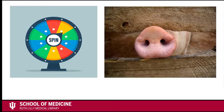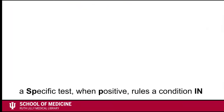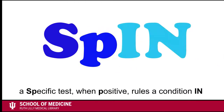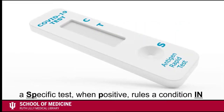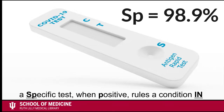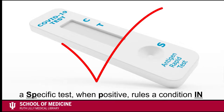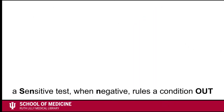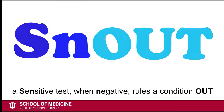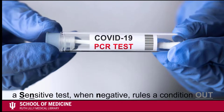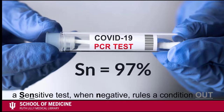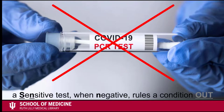Another way to help remember and understand the difference between sensitivity and specificity is to use the mnemonic SPIN and SNOUT. SPIN stands for a specific test when positive rules a condition in. An example of a specific test is the COVID-19 at-home antigen test. Some COVID-19 antigen tests have been found to be 98.9% specific among symptomatic people, so when symptomatic people test positive using one of these antigen tests, you can be pretty certain they have COVID. SNOUT stands for a sensitive test when negative rules a condition out. An example of a sensitive test is the COVID-19 PCR test. Some COVID-19 PCR tests have been found to be around 97% sensitive, so when people test negative after being tested for COVID using one of these PCR tests, you can be pretty certain they do not have COVID.